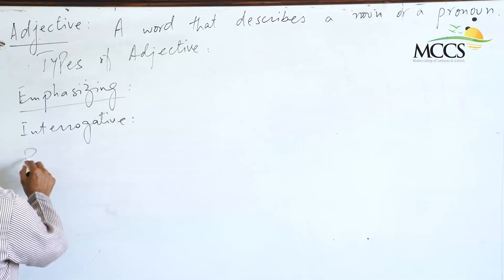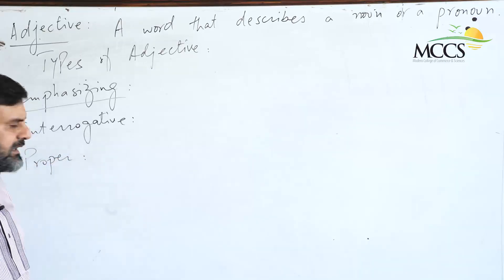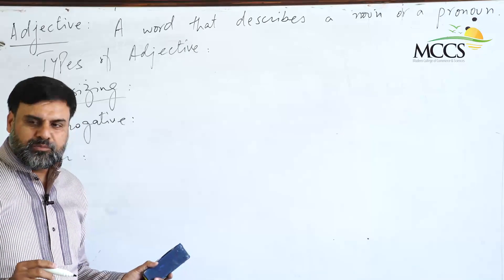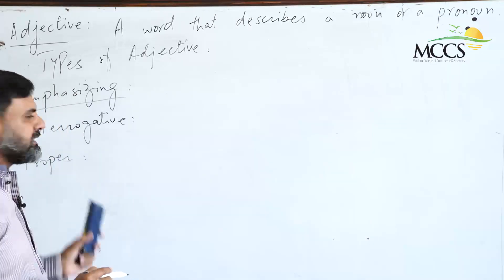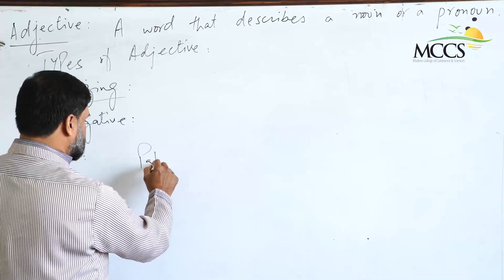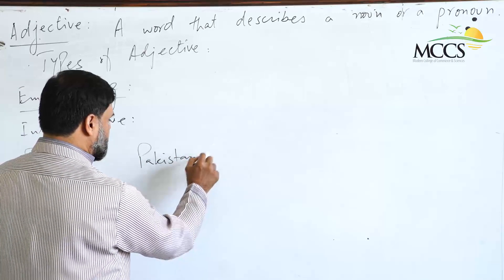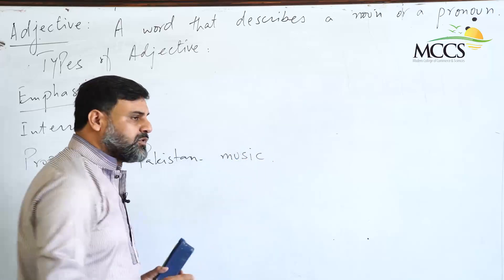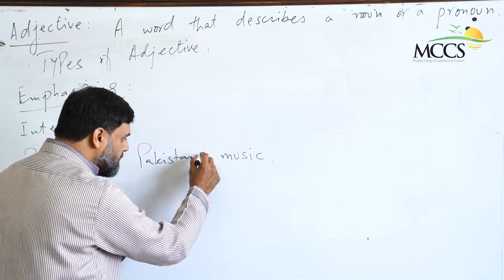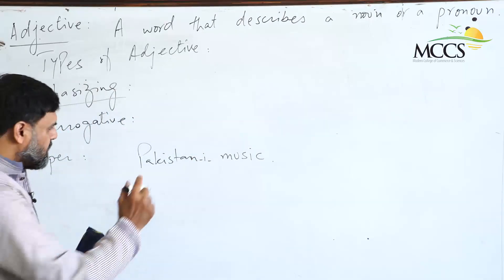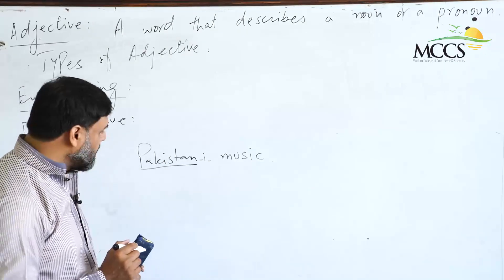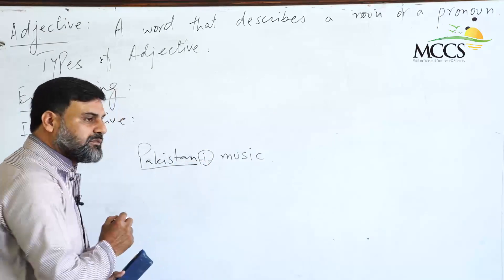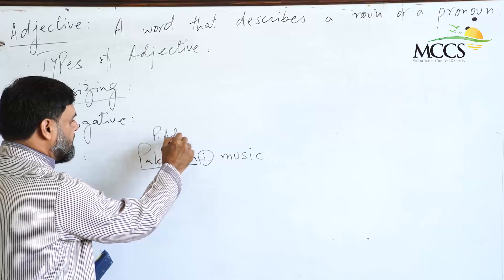The next type is called the proper adjective. This is not very frequently used, but it is used. Proper adjectives are simply adjectives that we form from proper nouns. For example, 'Pakistan' is a proper noun. If we want to add a noun alongside it, we cannot write 'Pakistan music' — we have to write 'Pakistani music.' So Pakistan was a proper noun, and when we formed a word from it to describe a noun, we made it 'Pakistani,' which makes it a proper adjective.